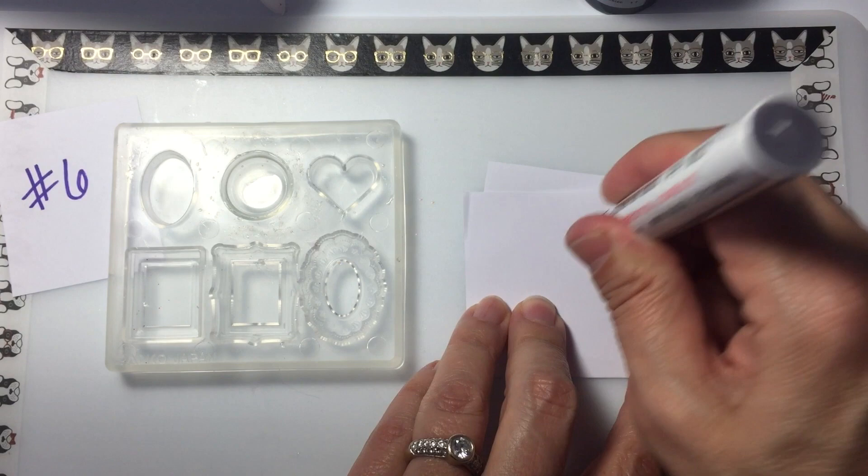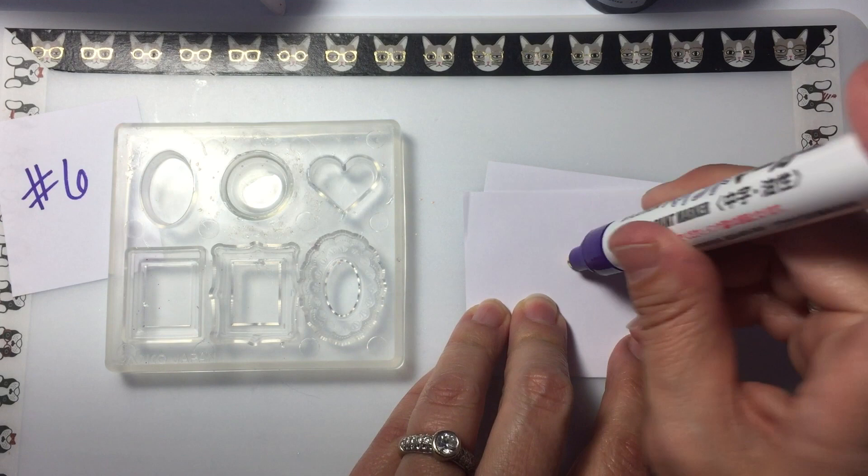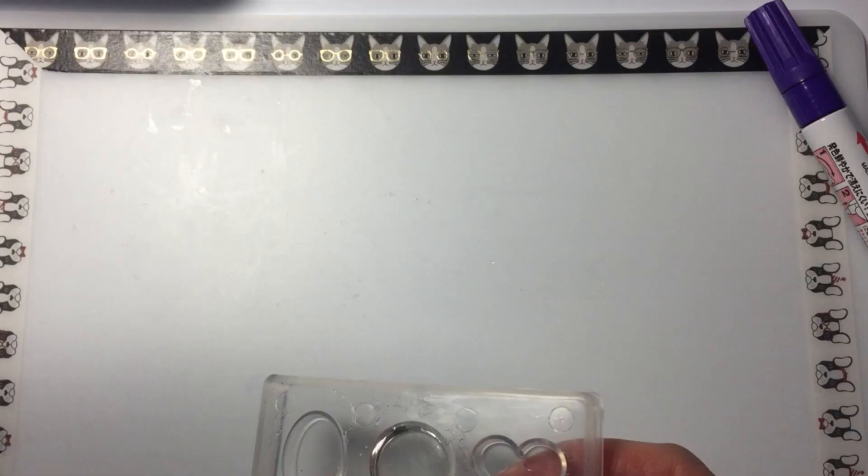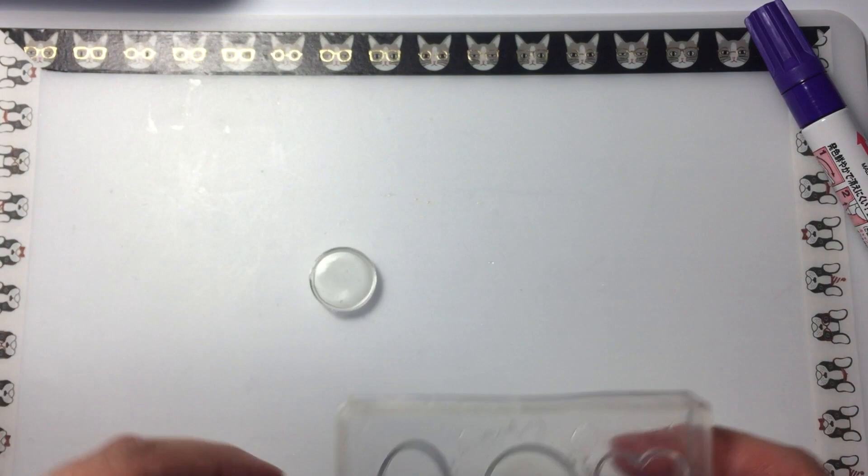I would recommend using Posca paint markers. They're the best. After you finish coloring or painting your piece, you will need to seal the whole piece with some more UV resin. Paint markers have a tendency to want to peel off away from the resin. I did all of the sealing off camera.